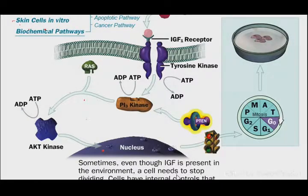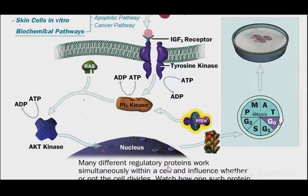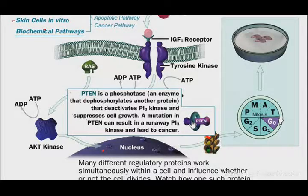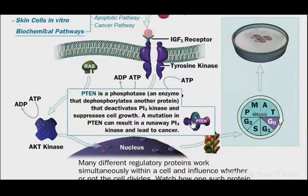Sometimes IGF is present in the environment of the cell. But we have to control the cell to divide. Here we can see there is a complex we call PTEN (P10). PTEN is a phosphatase, an enzyme that dephosphorylates another protein, so PTEN can deactivate it, suppress cell growth, and stop it. Mutation in PTEN can result in runaway PI3 kinase activity leading to cancer. If PTEN function is lost, PI3 kinase will remain activated, cell division will be uncontrolled, and cancer will result.